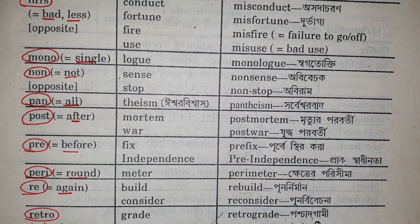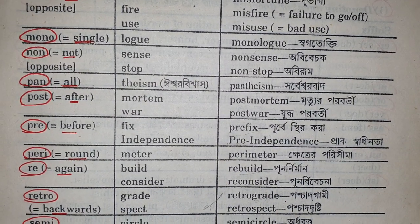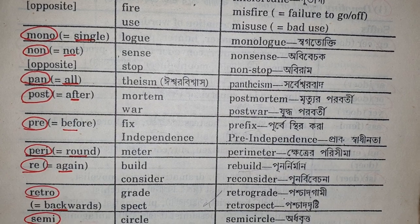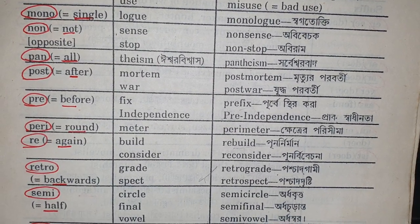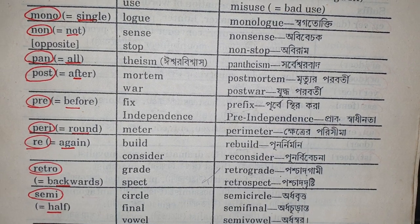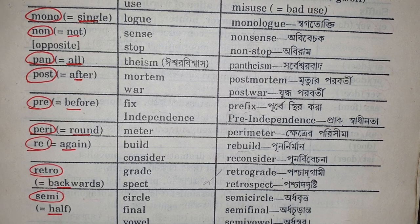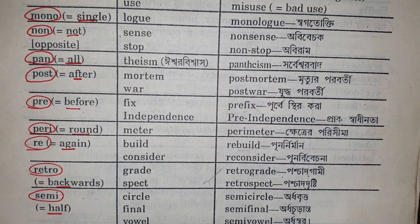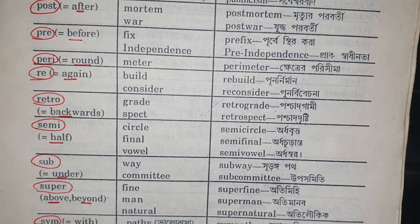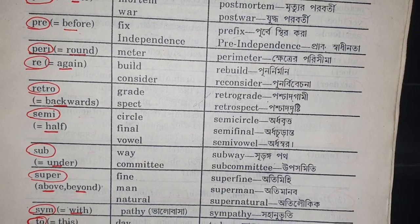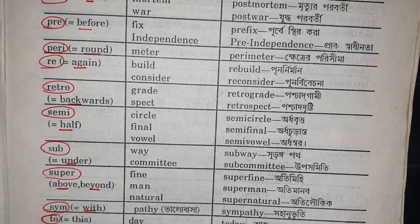Pan with the meaning of all — theism, pantheism. Post with the meaning of after — mortem, post-mortem. Pre with the meaning of before — fix, prefix; independence, pre-independence. Peri with the meaning of round — meter, perimeter. Re with the meaning of again — build, rebuild. Retro with the meaning of backwards — grade, retrograde; respect, retrospect.